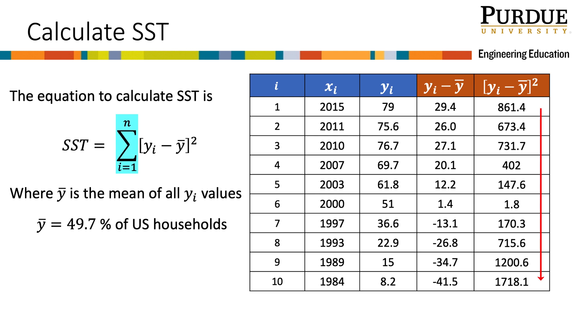Finally, I need to sum all of the squares of the deviations. This gives me 6622.6, and this number is the SST value, and completes this calculation.